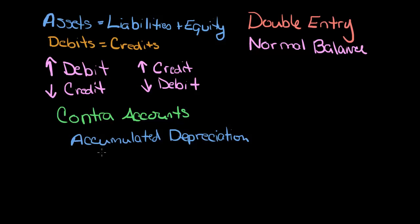So this is a contra asset because it's linked to an asset account, but the purpose of accumulated depreciation is to show a decrease to show the value of your equipment going down as you're using it up. So accumulated depreciation would work the opposite way. For accumulated depreciation, if you wanted it to increase, you would credit the account. And if you wanted it to decrease, you would debit the account.